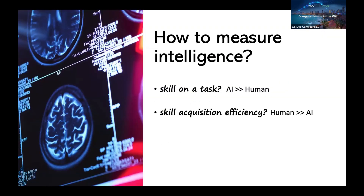One of the fundamental research questions of artificial intelligence is how to measure intelligence. If we measure intelligence in terms of performance on a particular task, then AI models already outperform humans in many tasks, ranging from switchboard speech recognition, machine translation, to image classification on ImageNet. However, if we measure intelligence in terms of skill acquisition efficiency, then despite recent breakthroughs in deep learning, humans still learn much more efficiently than computers in terms of energy consumption and the amount of supervision needed to learn to perform a task.